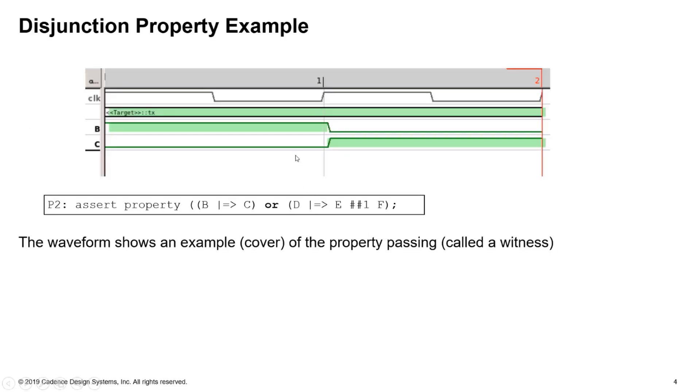Here's an example of a success of such a property. This is known as a witness and we can get Jasper tool to show this to us automatically. Note that in this case, what it's done is as we might expect from a formal tool, it's shown us the shortest way in which we can get success of that property, which is B followed by C. Note that D, E, and F don't even get plotted because they're irrelevant for this property passing. In this waveform here in Visualize, any time that the signal is shaded green, that means it's required to be true in that cycle.